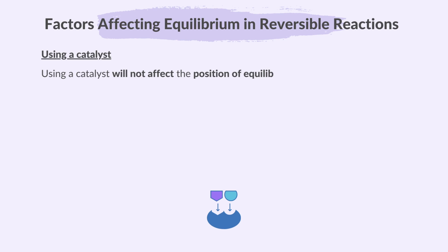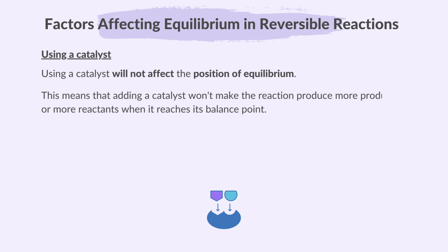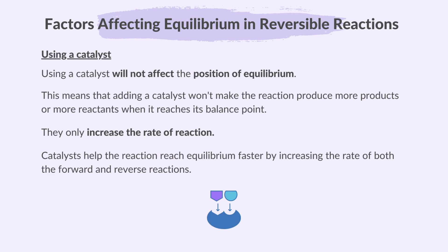Very importantly, using a catalyst will not affect the position of equilibrium. Adding a catalyst won't make the reaction produce more products or more reactants at the balance point. Catalysts only increase the rate of reaction — they help the reaction reach equilibrium faster by increasing the rate of both the forward and reverse reactions equally.